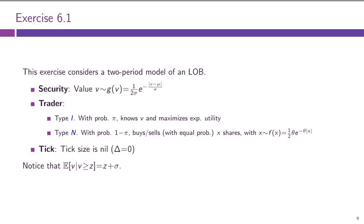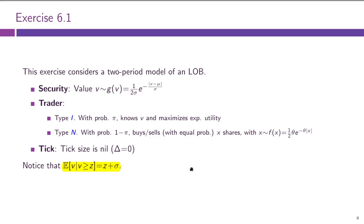A hint given in the textbook: for the exponential distribution, E[V | V ≥ Z] = Z + σ, where σ is the distribution parameter (the unconditional expectation of V conditional on sign). This is the problem setup. The key difference from the example is that instead of assuming the informed trader's behavior, we now derive it.